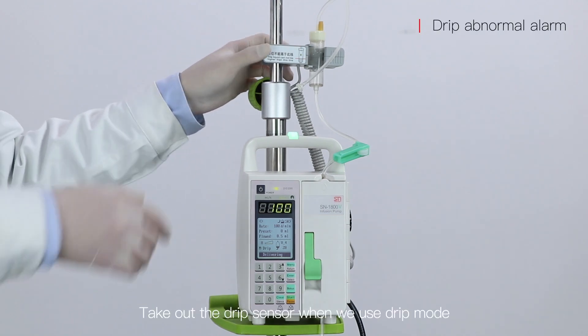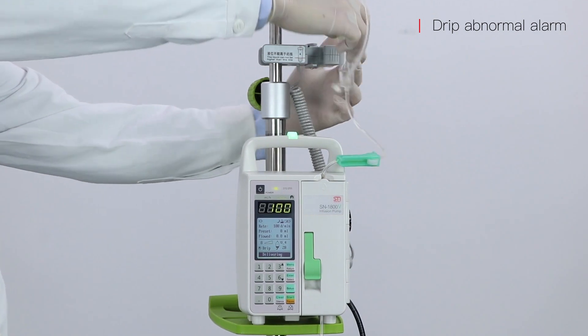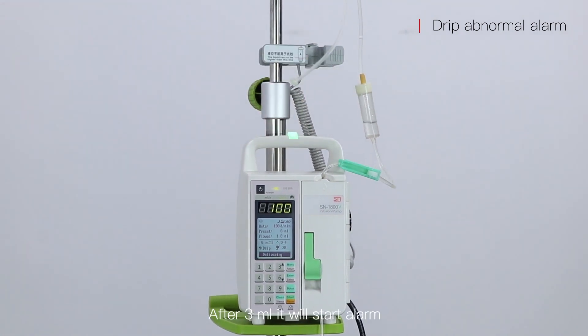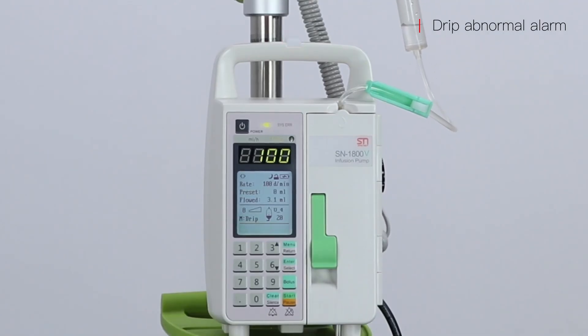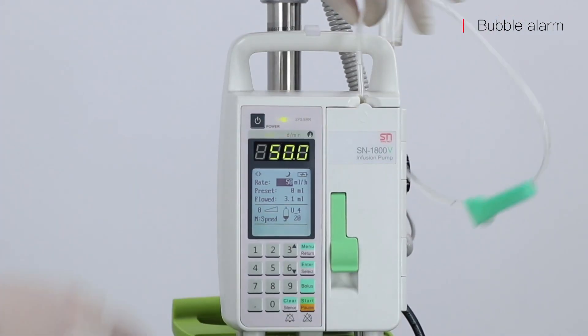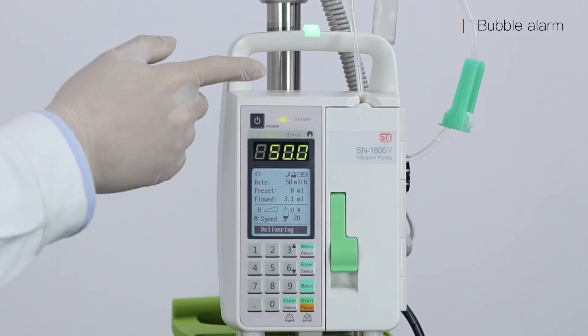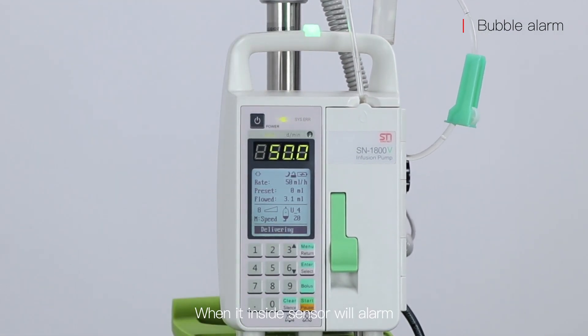Take out the drip sensor when we use the drip mode. After 3ml, it will start an alarm. If we have a bubble, we start. When it's inside the sensor, it will alarm.